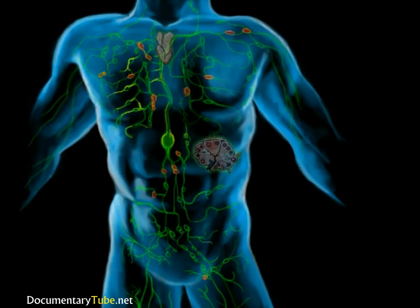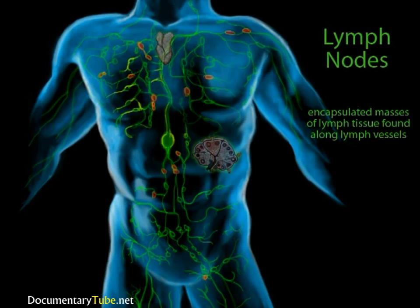Some lymph tissue is very diffuse, with no clear boundaries. You can actually feel some when you rub your lower inner lip with your tongue. Others are more organized into groups, and these are called lymph nodes. Lymph nodes have three functions. First, they are testing stations.